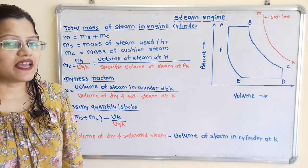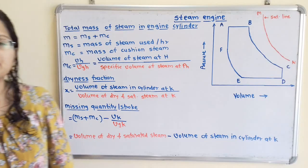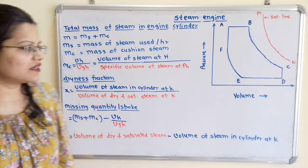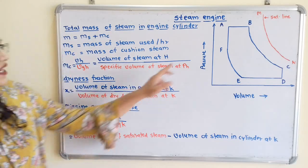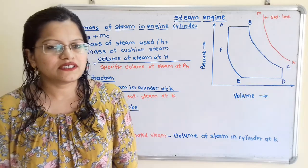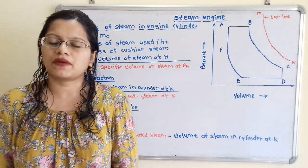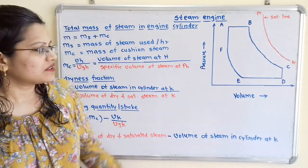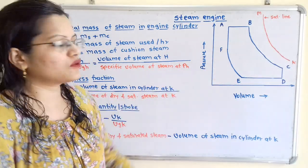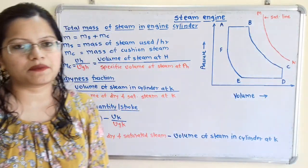The steam left behind in the clearance space is known as cushion steam, that is mc. How to calculate this? We will understand it with the help of the indicator diagram of a steam engine, which is explained in my previous video — please refer to that. In the diagram, here is pressure and here is volume. The curve EF is known as the compression curve and curve BC is known as the expansion curve.